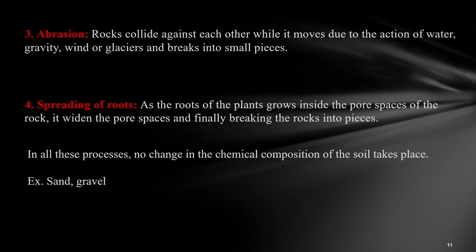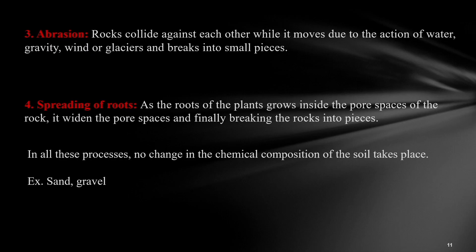The next mechanism is abrasion, which takes place when rock mass moves because of water, gravity, wind, or glaciers. During this movement, rocks collide against each other and break into small pieces. The next is spreading of roots — as the root of a plant grows inside the pore space of the rock, it widens the pore spaces and finally breaks the rock into small pieces. In all mechanical weathering processes, there is no change in the chemical composition of the soil — it remains that of the parent rock. Examples of this kind of soil are sand and gravel.